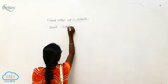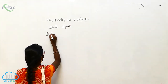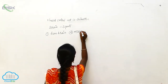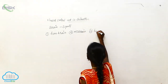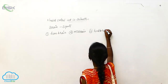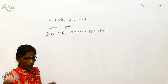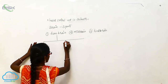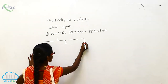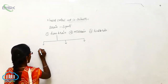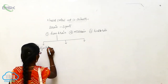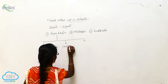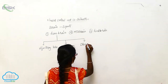The brain has three parts: the forebrain, midbrain, and hindbrain. The forebrain is divided into three types: the olfactory lobe, cerebrum, and diencephalon.